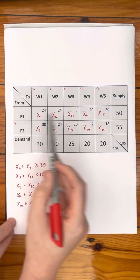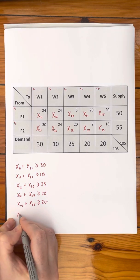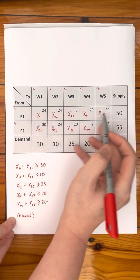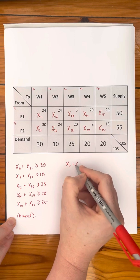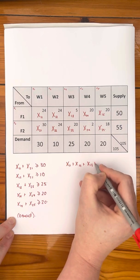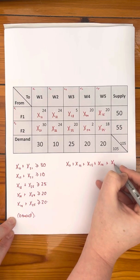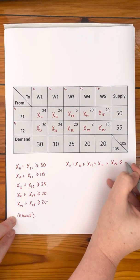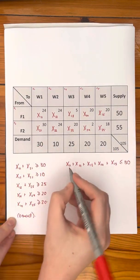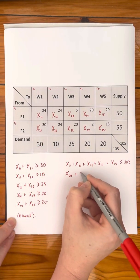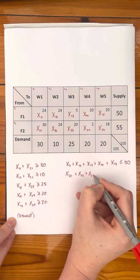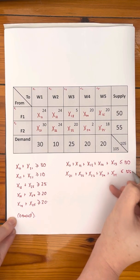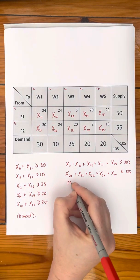Then you have your row constraints, which are your supply constraints. Reading across the row: X1-1 plus X1-2 plus X1-3 plus X1-4 plus X1-5, and you only have 50 available, so your factory can only supply that many — less than or equal to 50. For the next row: X2-1 plus X2-2 plus X2-3 plus X2-4 plus X2-5 is less than or equal to 55.